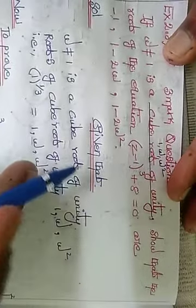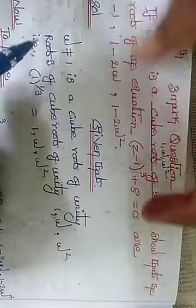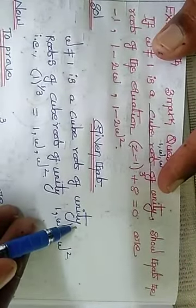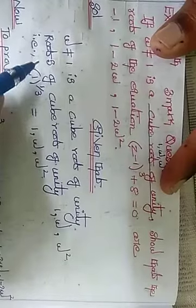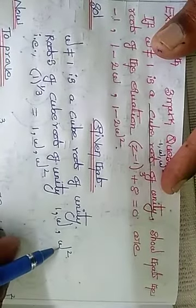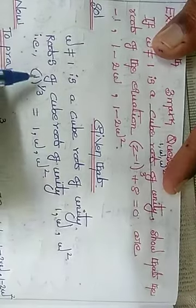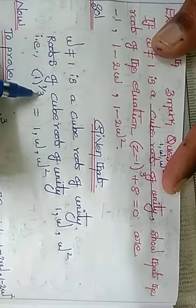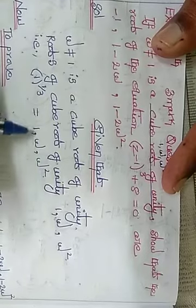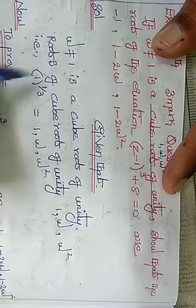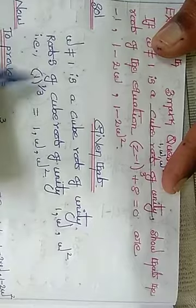Solution: Given that omega ≠ 1 is a cube root of unity. The roots of the cube root of unity are 1, omega, omega square. Cube root of unity: 1, cube root of 1 to the power 1/3 gives 1, omega, omega square.